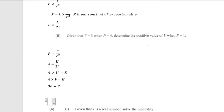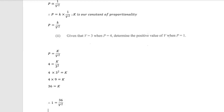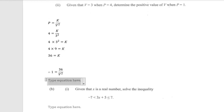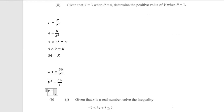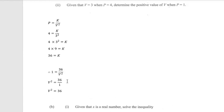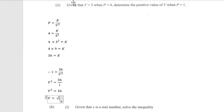So with k equal to 36, we have 1 equals 36 divided by v squared. Rearranging, v squared equals 36 divided by 1. Therefore v squared equals 36. To get rid of the square we square root both sides of the equation, so v equals the square root of 36.